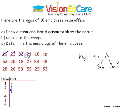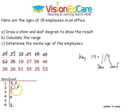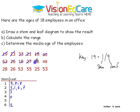We have 21, 18, 40, 62, 22, 26, 18, 27, 48, 28, 28, 26.